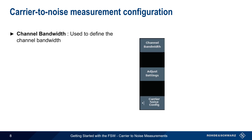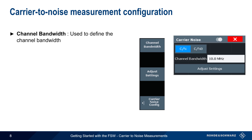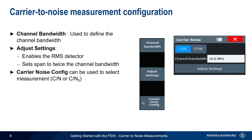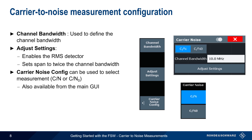The most important setting in Carrier-to-Noise measurements is the channel bandwidth. This must be entered by the user, and the value of the channel bandwidth will vary depending on the measurement application. The other important parameter is Adjust Settings. Pressing this will enable the RMS detector, which is the appropriate detector for measuring power, but will also set the span to twice the configured channel bandwidth. The Carrier-to-Noise config dialog also allows a user to choose between Carrier-to-Noise and Carrier-to-Noise Density measurements, although this setting is also available directly from the main GUI.